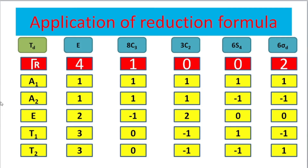The character table for methane molecule has a total of 24 operations, five classes, and five irreducible representations: A1, A2, E, T1, and T2. By the bond vector method, we can obtain the reducible representation. In methane, there are four bonds. By the identity operation, four are undisturbed — represented by 4. By C3 rotation (120°), one bond on the rotation axis is undisturbed — represented by 1. By C2, all bonds are disturbed — represented by 0.